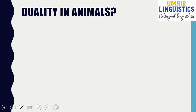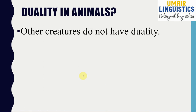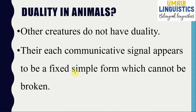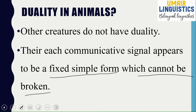Now we are going to talk about animals — do animals also have duality in their language? The answer is no. Other creatures do not have duality. Each communicative signal in animal communication appears to be a fixed, simple form which cannot be broken down. If animals had duality, they must be able to break their signals into different discrete sounds — but this is not observable, and it does not actually happen.